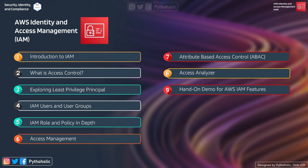First we will talk about the introduction to IAM, then what is access control, and we will explore the principle of least privilege, IAM users and IAM user groups. We will also discuss in depth IAM roles, policies and permissions, access management, ABAC and its differences with RBAC, and how this is incorporated into IAM. Next we will talk about the access analyzer.